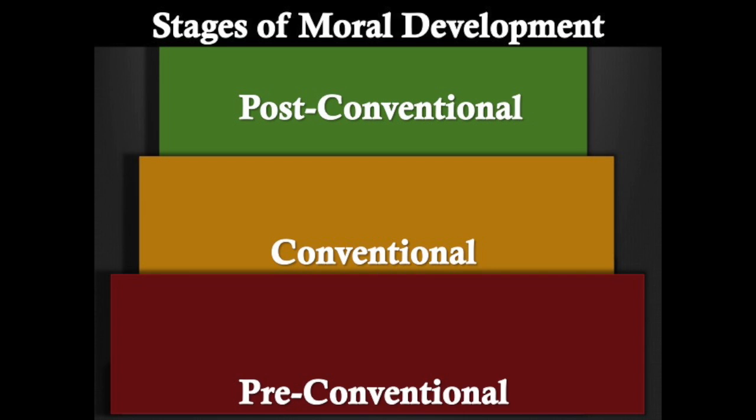The third is the post-conventional level. In this third level, an individual's perspective takes priority over the perceptions of society. Rules are broken when it comes to life, liberty, and justice. According to Kohlberg, not many individuals reach the latter stage of moral development because it's difficult to step out of the norms of law and order. Most individuals will actually stay at stage four.